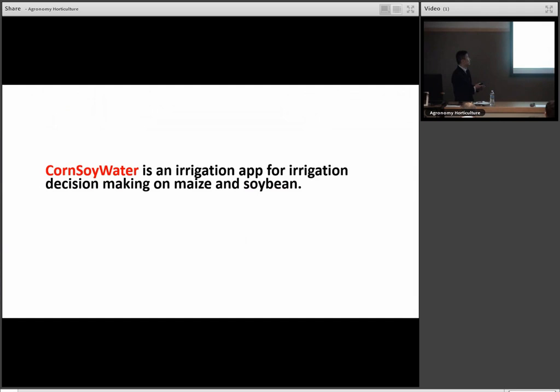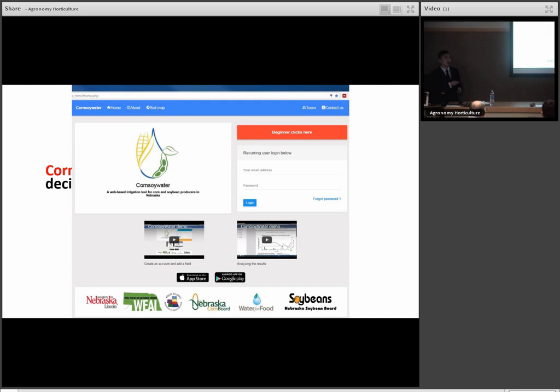So that's the reason we built this CornSoyWater app. It's an irrigation app which helps farmers make irrigation decisions on corn and soybean. This is the home page of the app. Basically it's like any regular website - we have a login account. A user can register a free account to access this platform. It's very intuitive. Even for first-time users, if they have questions, we prepare YouTube videos to tell them step by step how to establish an account and how to use it. They can also get the app in the Apple and Google stores - just go and download the app.